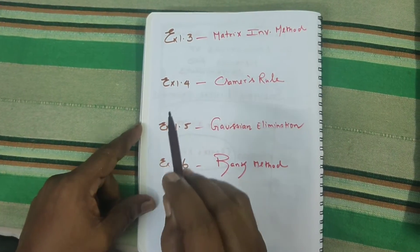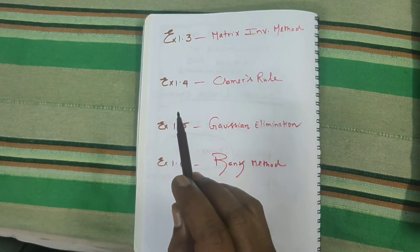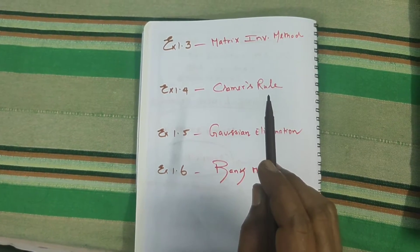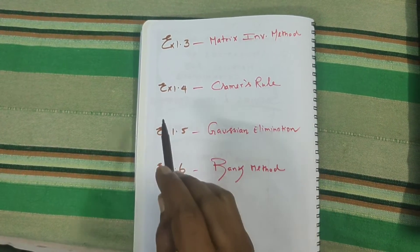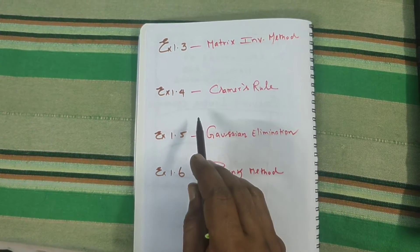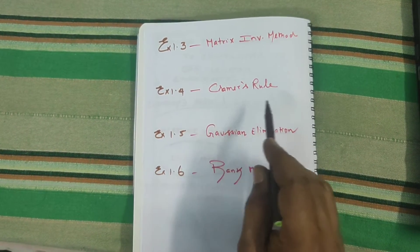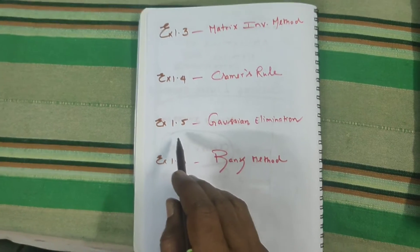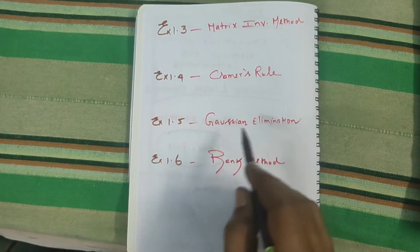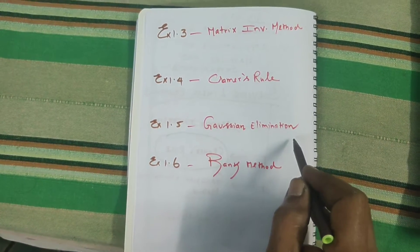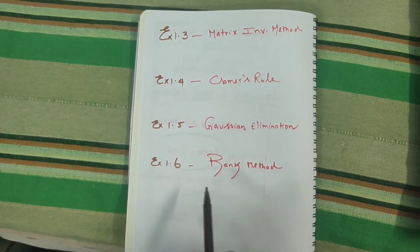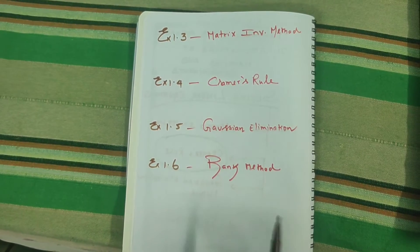Exercise number 1.3 is the matrix inversion model. Exercise number 1.4 is Cramer's rule. Exercise number 1.5 is the Gaussian elimination method. Exercise number 1.6 is the rank method.